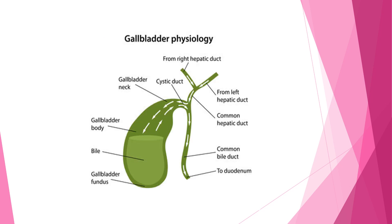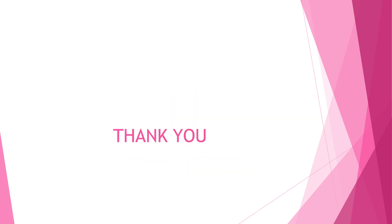This is the gallbladder diagram. This is the gallbladder, the neck region, the body, the fundus, the cystic duct, and the hepatic duct where bile is produced. It reaches the gallbladder, and when food reaches the intestine, the gallbladder releases bile into the small intestine. Thank you.